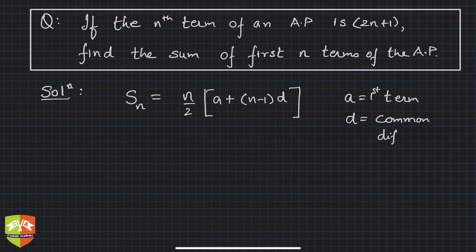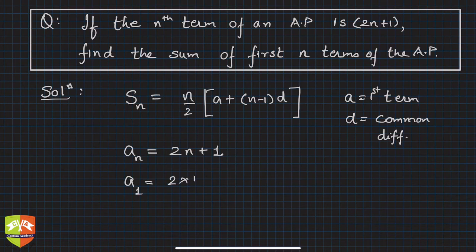Now in this case it's given that a_n, the nth term, is given as 2n plus 1. So we have to just find out a and d and we are done. So what is a_1? The first term will be simply put n equals to 1 and this is 3.